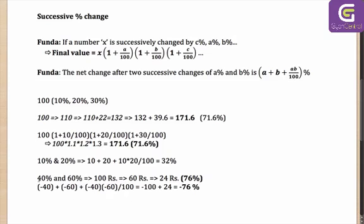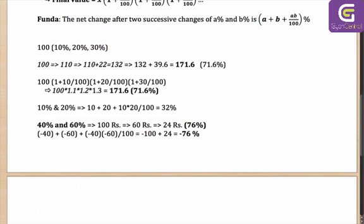So let's say a particular shop offers you 40% discount and then 60% discount, whereas a rival shop offers you 60% discount and then 40% discount. Which shop should you go to? You can go to either, because 40% then 60% and 60% then 40% are going to be exactly the same. Meaning, the order of percentages does not matter. What matters is their values and whether they are positive or negative.